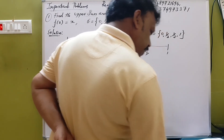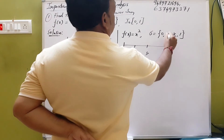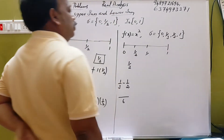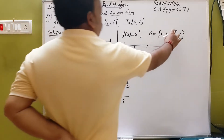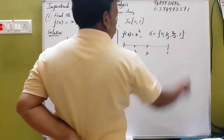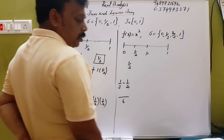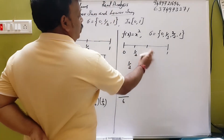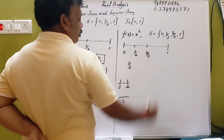It is 1 by 3 minus 1, giving 2 by 3. So, we have to write here: 0, 1 by 3, 2 by 3, out to 1. Now 1 by 3 and 2 by 3 — it is easy to get this partition.